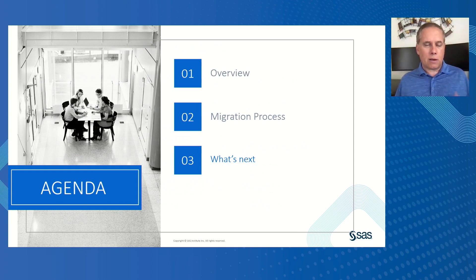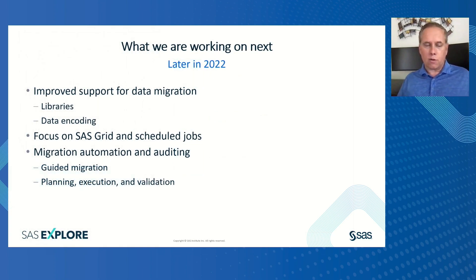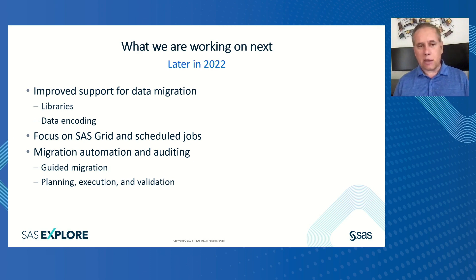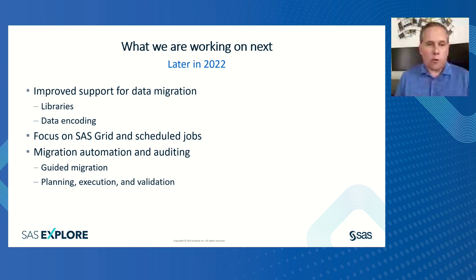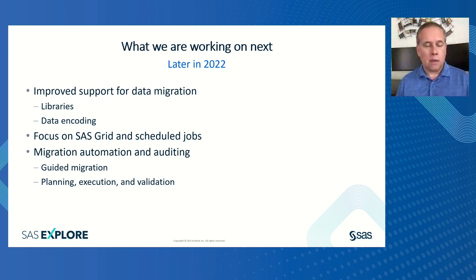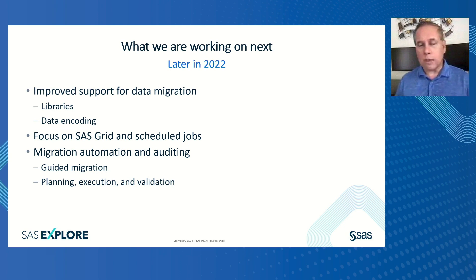In terms of what's next, there's still more ground we hope to cover in migration. Later in 2022, we were going to focus more on data migration. Beyond code migration and objects like DI Studio jobs and Enterprise Guide projects, we're also turning focus to SAS libraries, data encoding, and other things that will help you get those pieces of content onto Viya. Another important piece — once your DI Studio and Enterprise Guide flows are in SAS Studio — we want to make sure they scale. So we're migrating configuration of your SAS grids and schedules. That's an important area we're focusing on for the latter part of this year and into next: making sure your scheduled tasks will run fine in Viya. Some customers have upwards of 30,000 jobs a day, and that's a daunting task to make sure they can work fine in a new environment like the cloud.